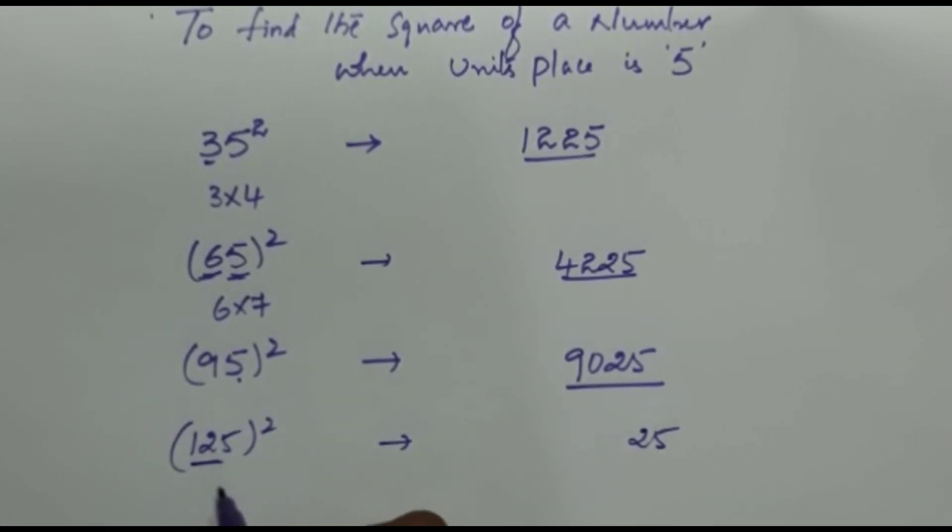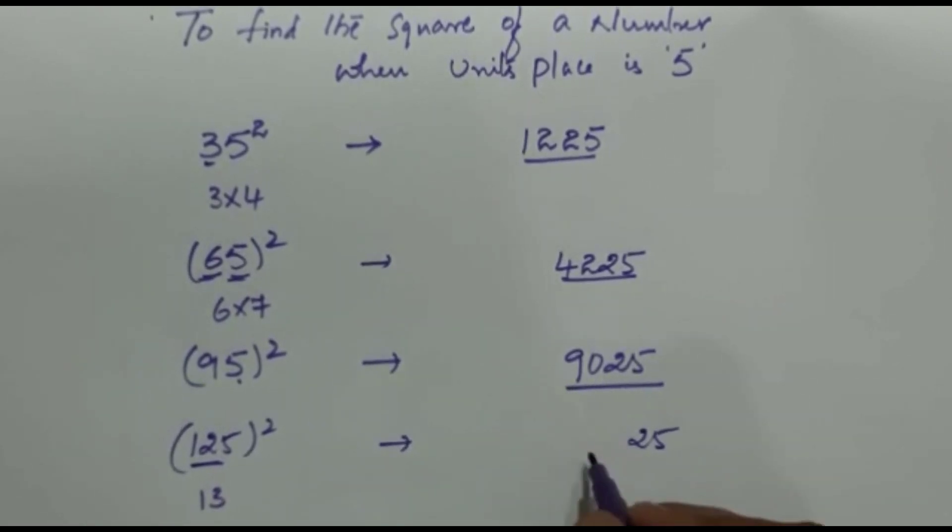And here 12 is there. 12 after 13. 12 times 13 is 156. So write down 156. So 15625, this is the square of 125.